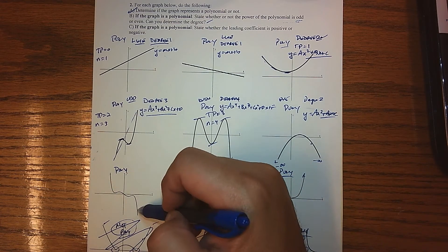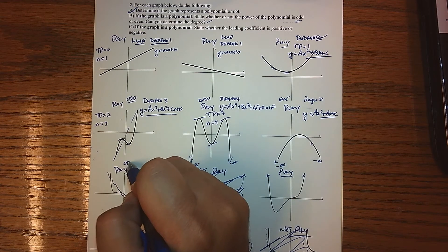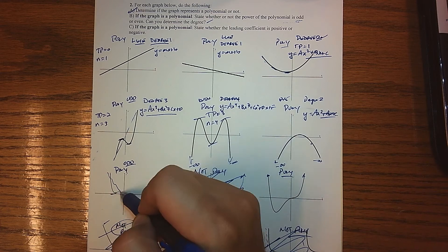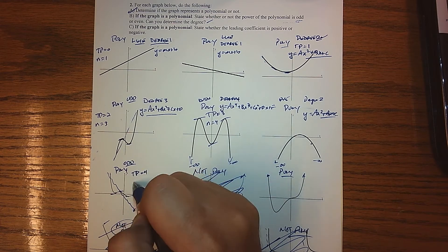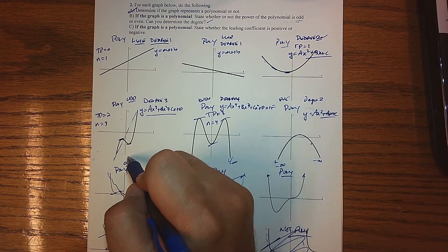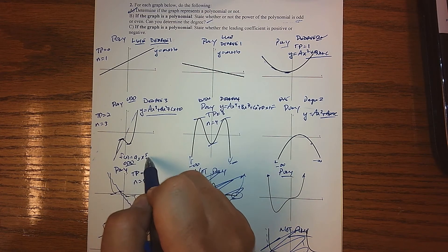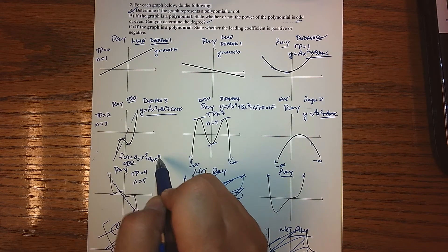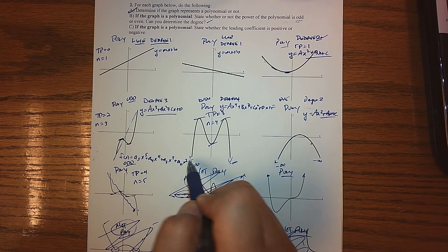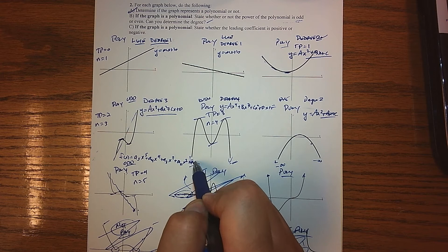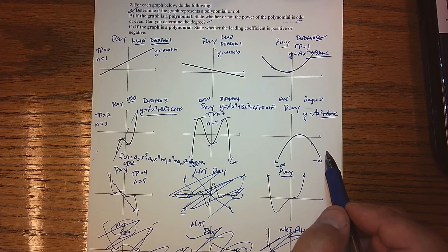Here, the end behavior is different — we're generally on our way down. So this is telling us that we're an odd degree. And I see four turning points. So that means my n is five. So f of x is some a₅x to the fifth plus a₄x to the fourth plus a₃x cubed plus a₂x squared plus a₁x plus a₀. So we're at a very complicated function — at least degree five.